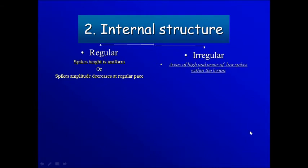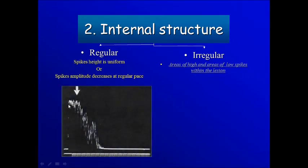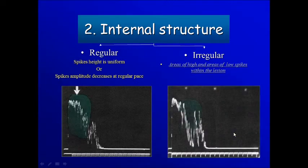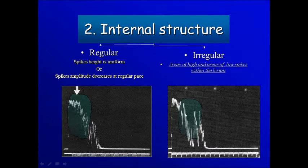The second thing is the internal structure. The internal structure of a mass can be regular or irregular. A regular internal structure means that within the lesion area, the amplitude is at a uniform level or gradually slowly decreases. An irregular internal structure means that the reflectivity can be high, then low, then high, then low — alternating areas of high and low reflectivity, giving high spikes and low spikes.